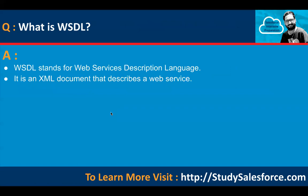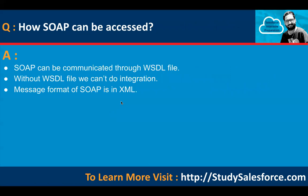What is WSDL? WSDL stands for Web Services Description Language. It is an XML document that describes a web service. SOAP can be communicated through a WSDL file; without a WSDL file, we cannot do integration. The message format of SOAP is XML.